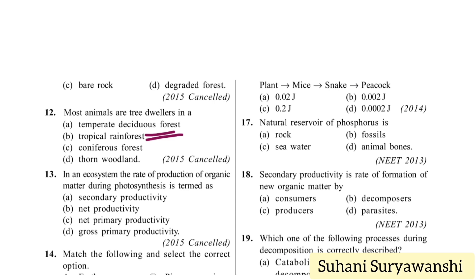In an ecosystem, the rate of production of organic matter during photosynthesis is termed as which primary productivity? The correct answer will be gross primary productivity. If we subtract respiratory loss from gross primary productivity, we get net primary productivity. Secondary productivity means biomass produced by consumers.